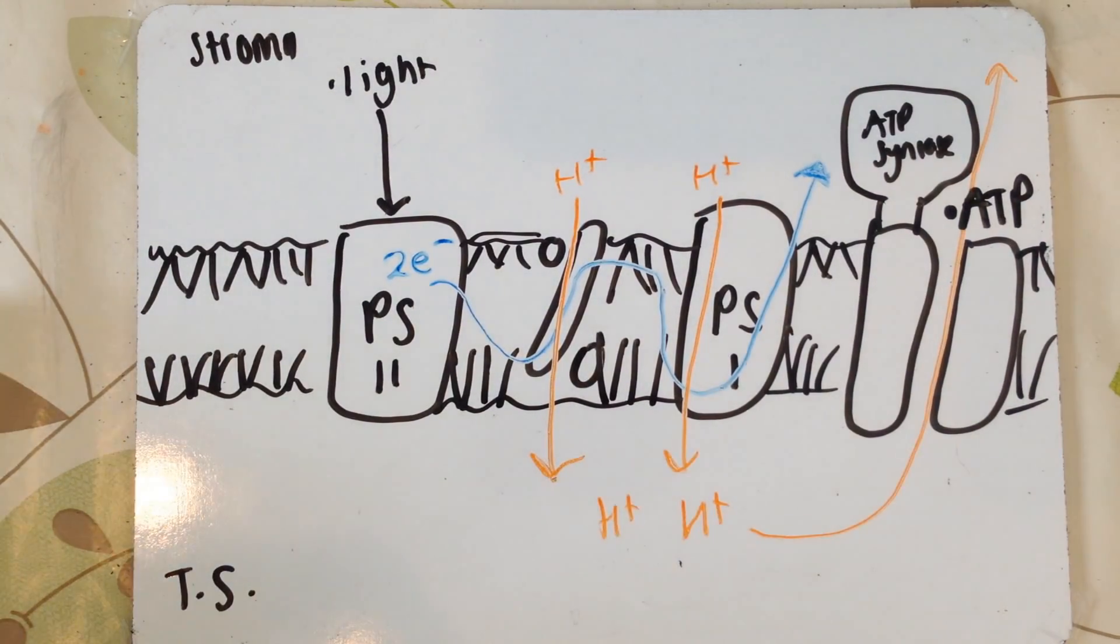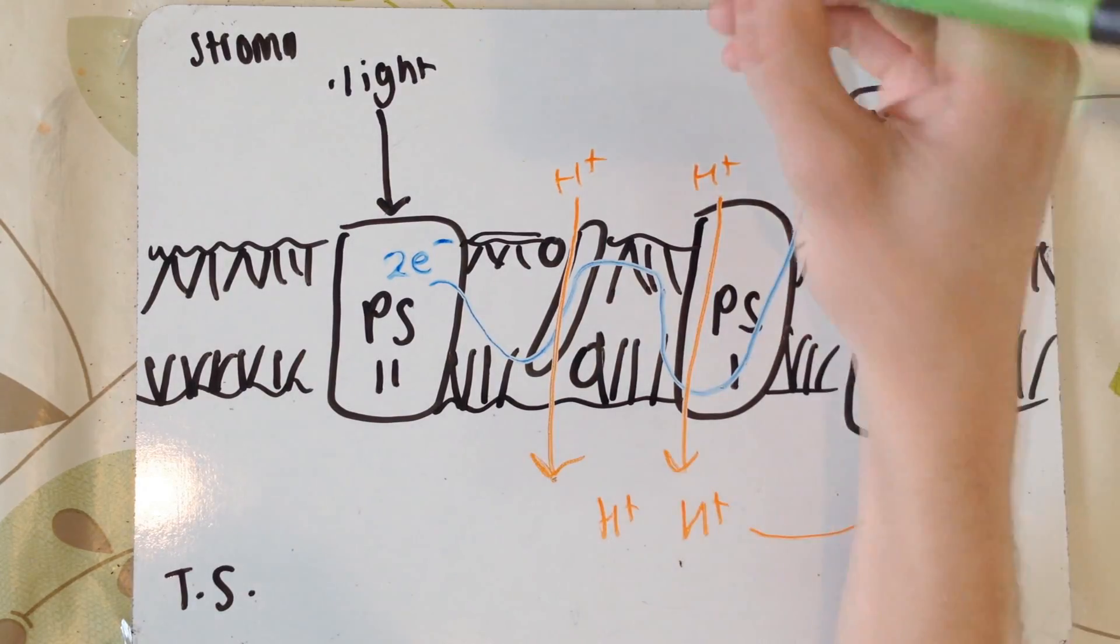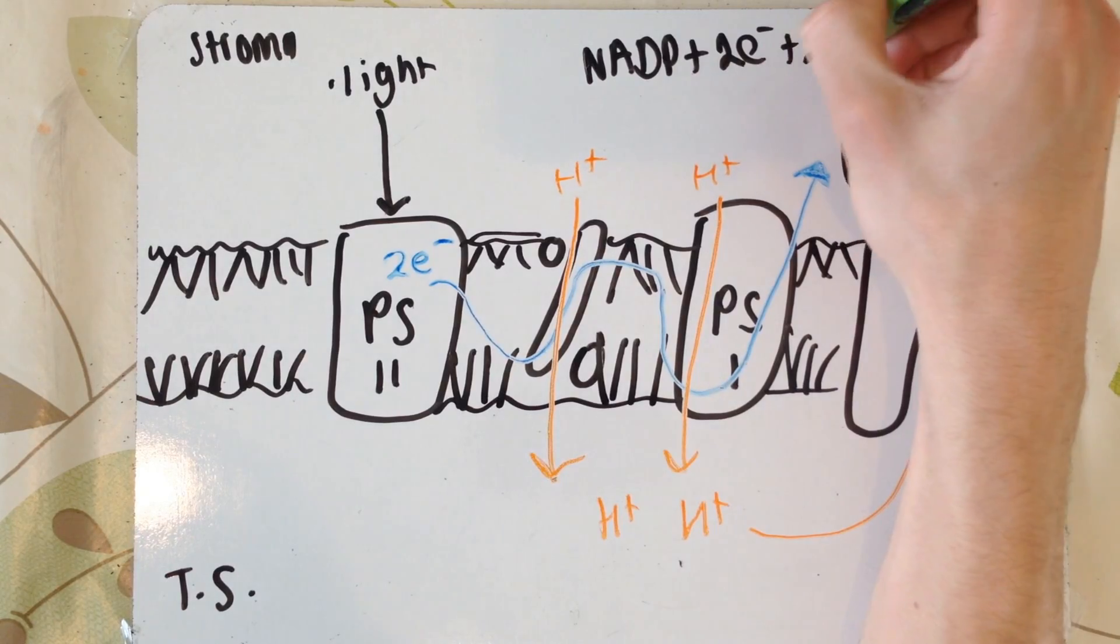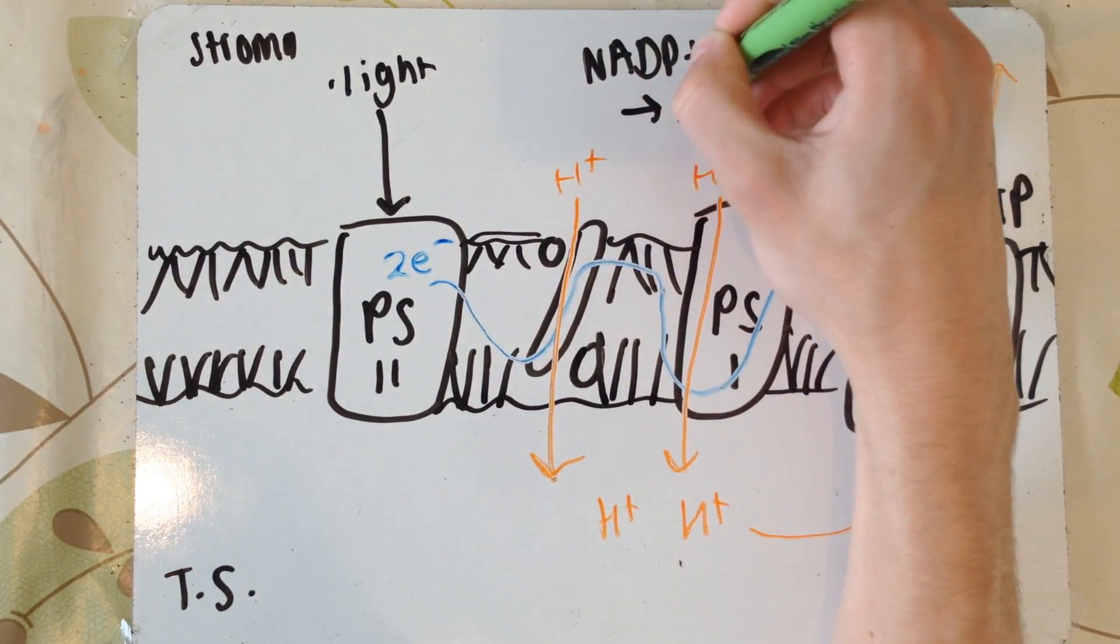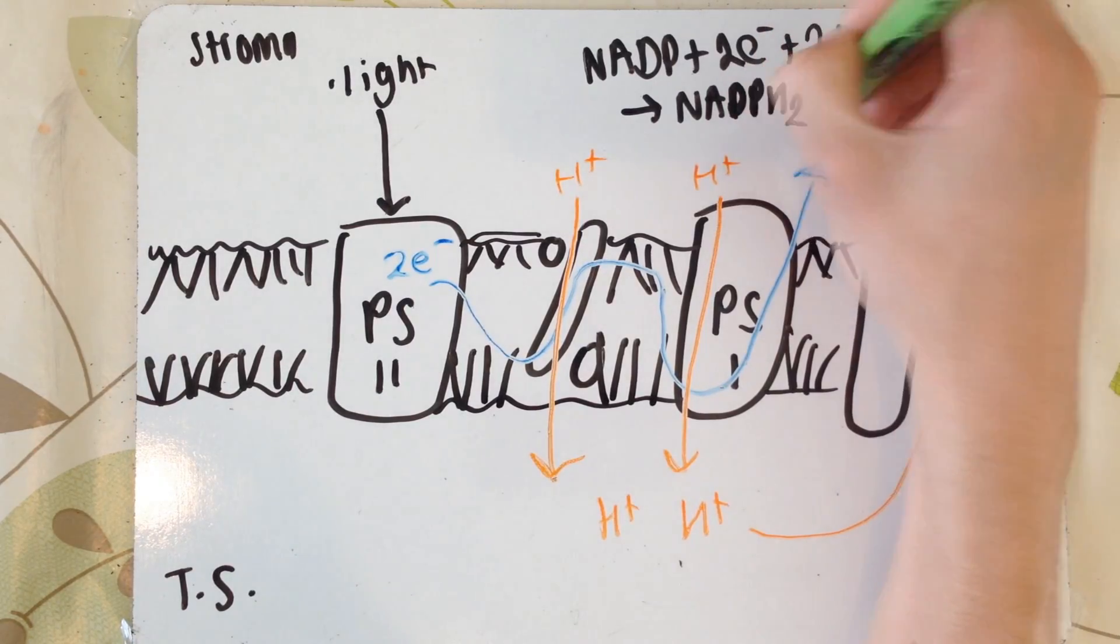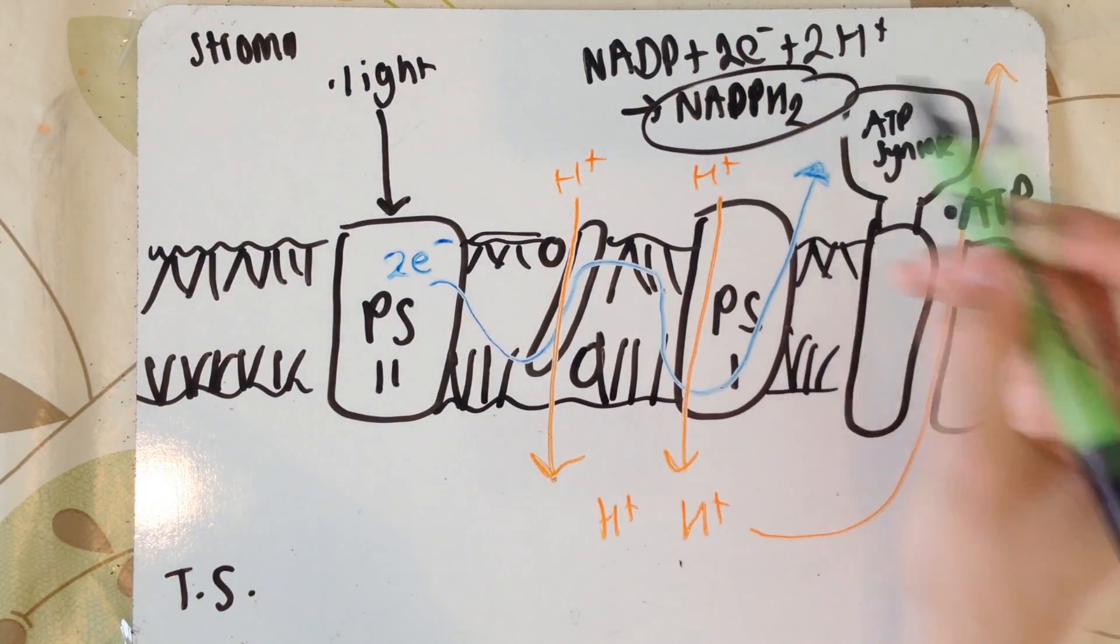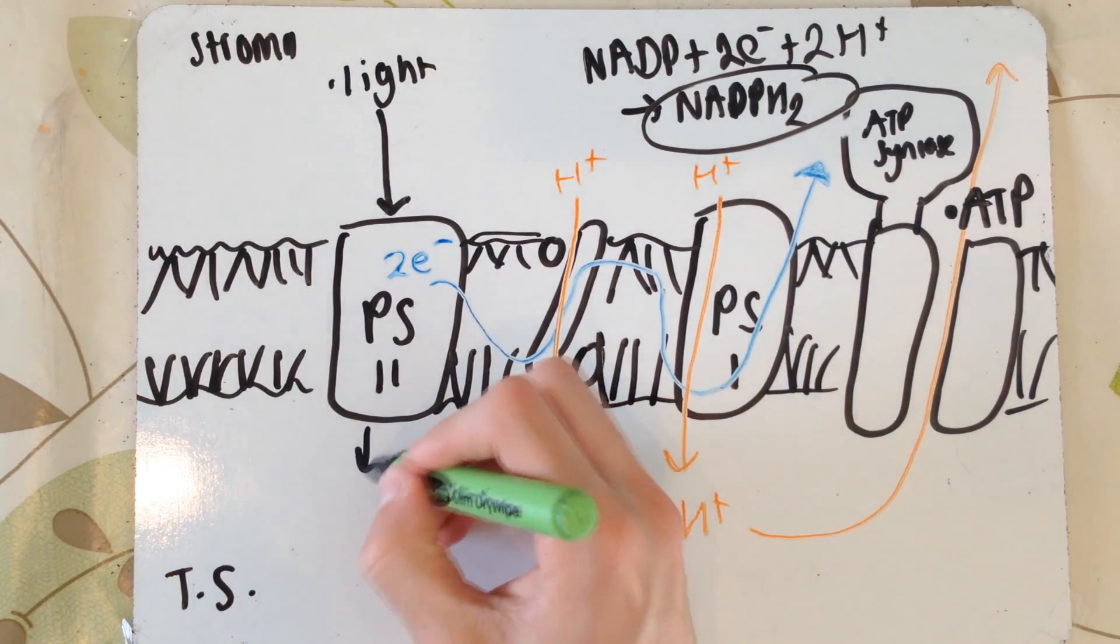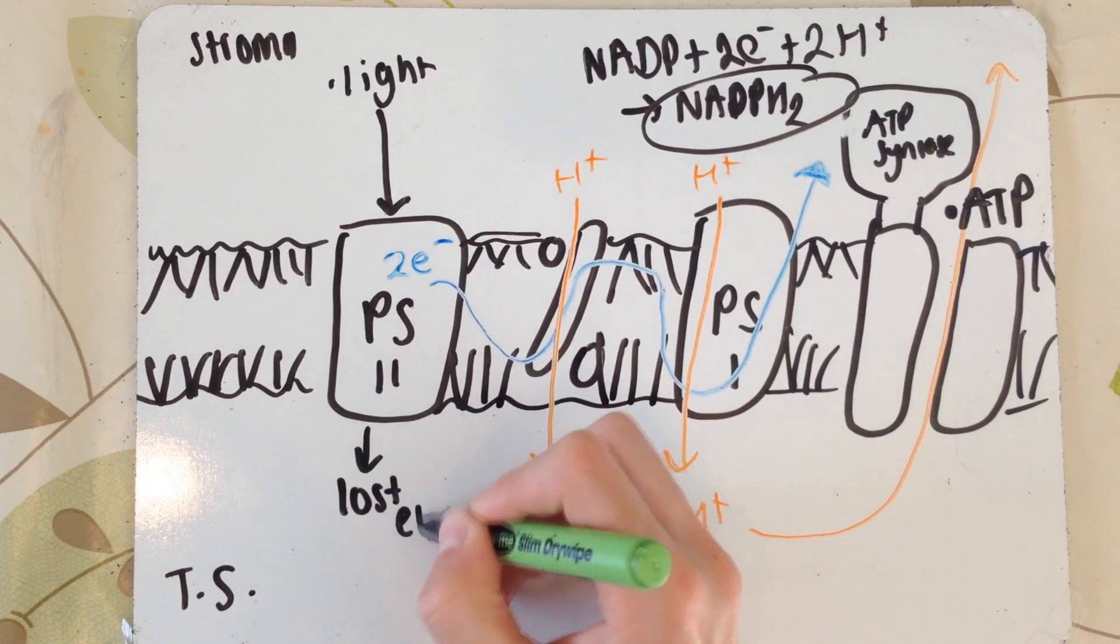Here we then have NADP, which is essentially an electron and a proton carrier. You get the NADP and the two electrons I told you about a moment ago that left photosystem 1. Not only have they pumped the H+ through, but they all combine together to form reduced NADP, which I've written down as NADPH2.